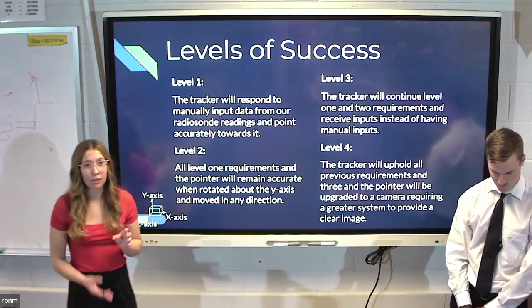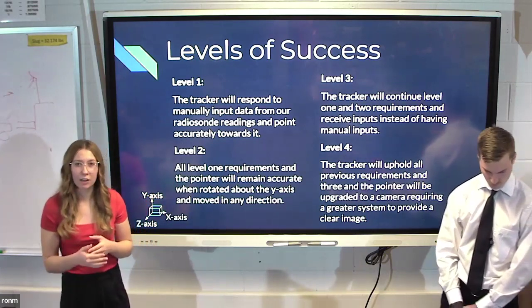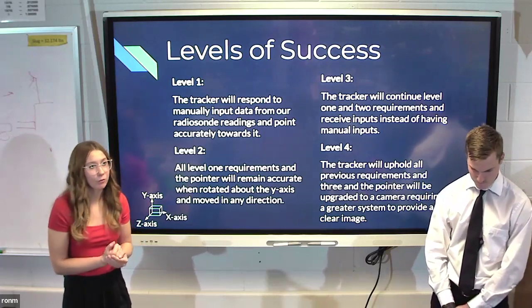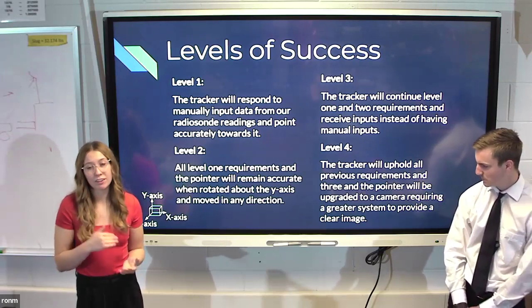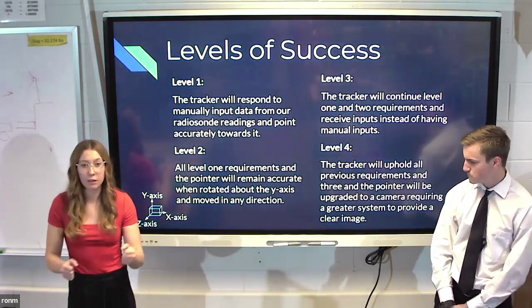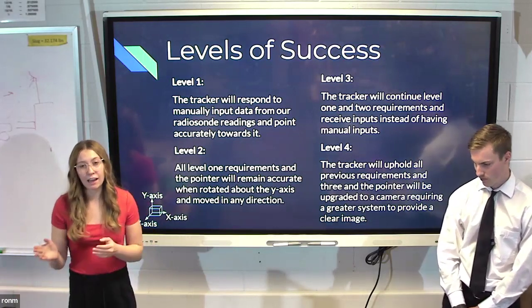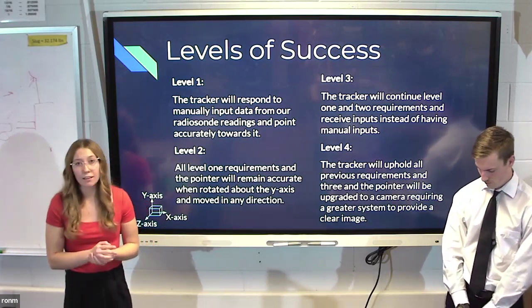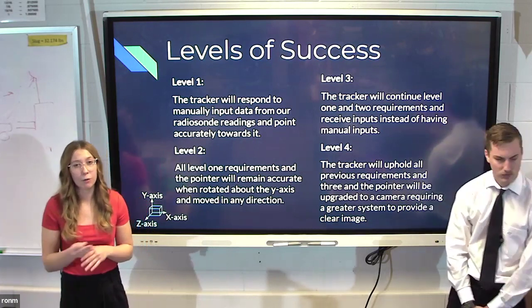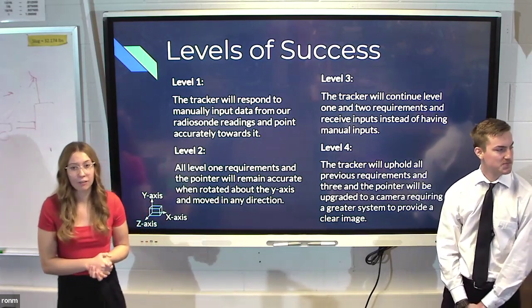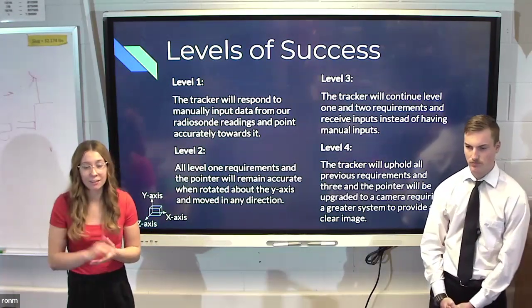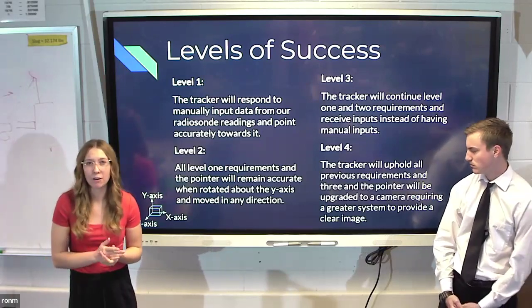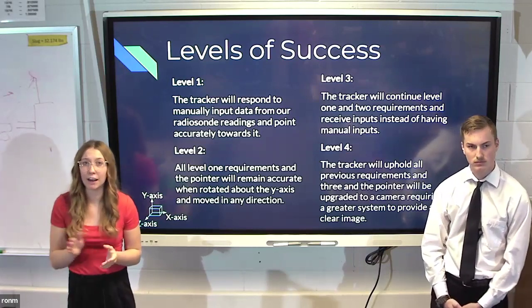Our first defined levels of success were that number one, it would be run off of manual inputs and would just point in the direction of the balloon. So pretty basic. Level two was that we would still have to do a couple manual inputs, but it would be fully mobile. You could move it anywhere and it would stay pointed at the radiosonde where it was. Level three is that it would receive data from the radiosonde and we would not have to worry about it at all. Like it could just sit in the passenger seat of the car and point at the radiosonde as we're moving. It's fully mobile. And level four would be to attach some sort of camera or scope to that so that you could film the entire flight of the balloon.